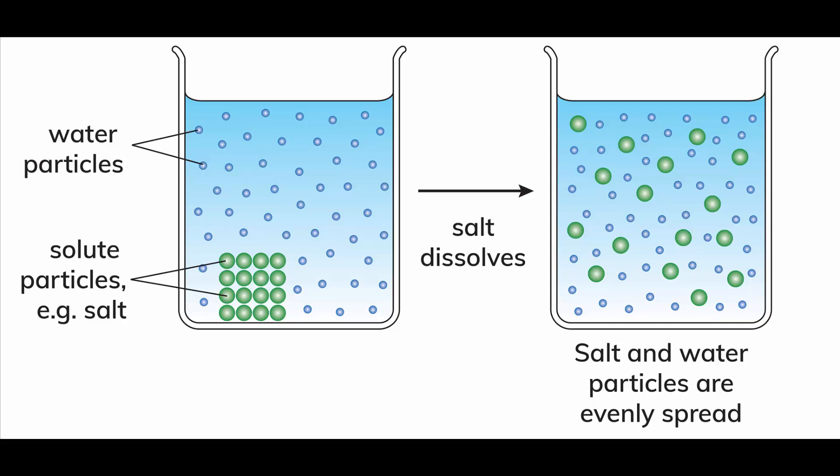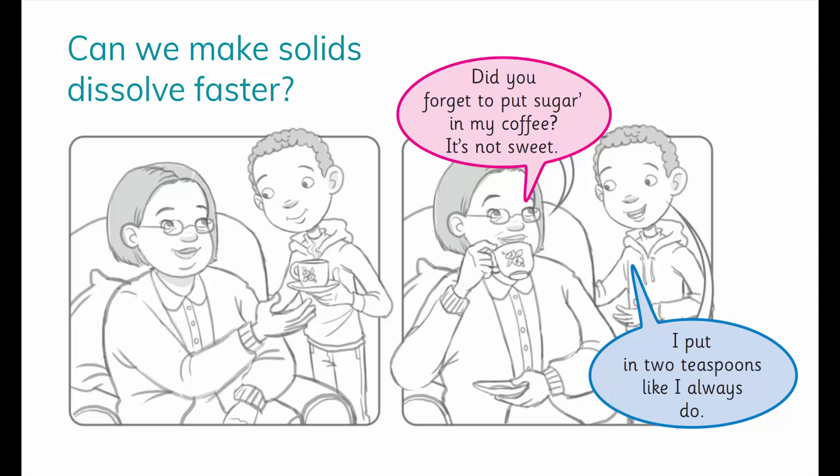The picture shows how the solute particles spread when they dissolve in water. The coffee and sugar form a solution. The sugar will dissolve faster if Marcus stirs the solution. Stirring is one way to make solid solutes dissolve faster. Stirring causes the particles of the solute to spread out into the spaces between the solvent particles more quickly. We say that stirring increases the rate at which a solute dissolves.